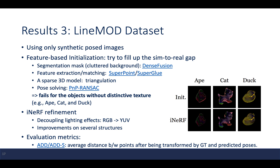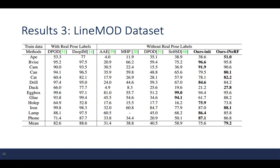The model was also tested on the LineMod dataset using only synthetic pose images. A feature-based initialization is performed first, but it fails for objects without distinctive textures — for example, the ape, cat, and dog. However, iNeRF can improve the performance of pose estimation on these objects. Results are evaluated with the ADD-S metric. As shown in the chart, the initialization method proposed in this paper outperforms other methods, and iNeRF further improves performance on several objects.